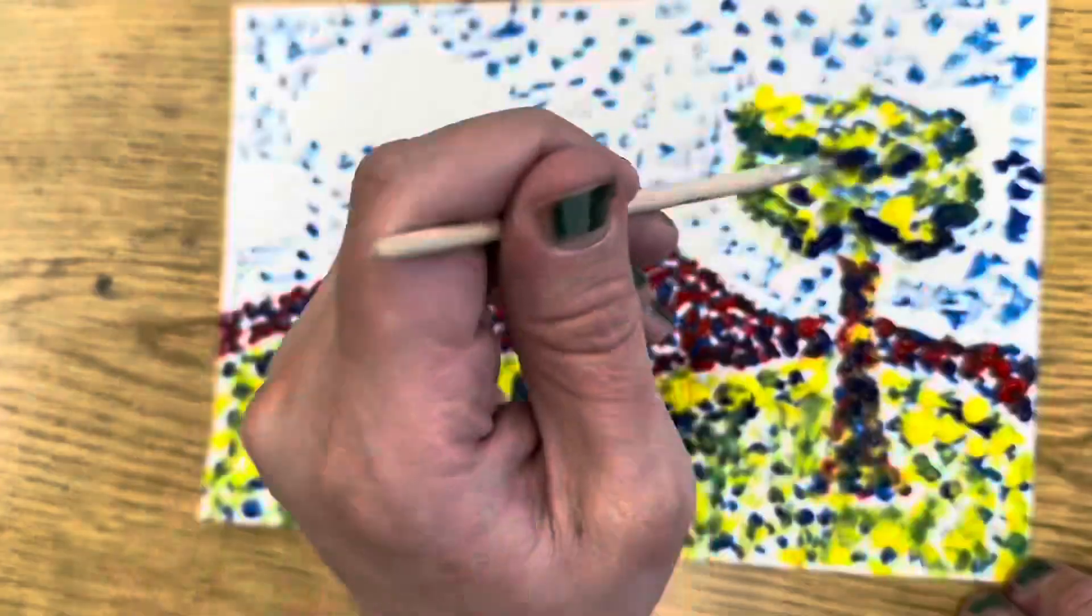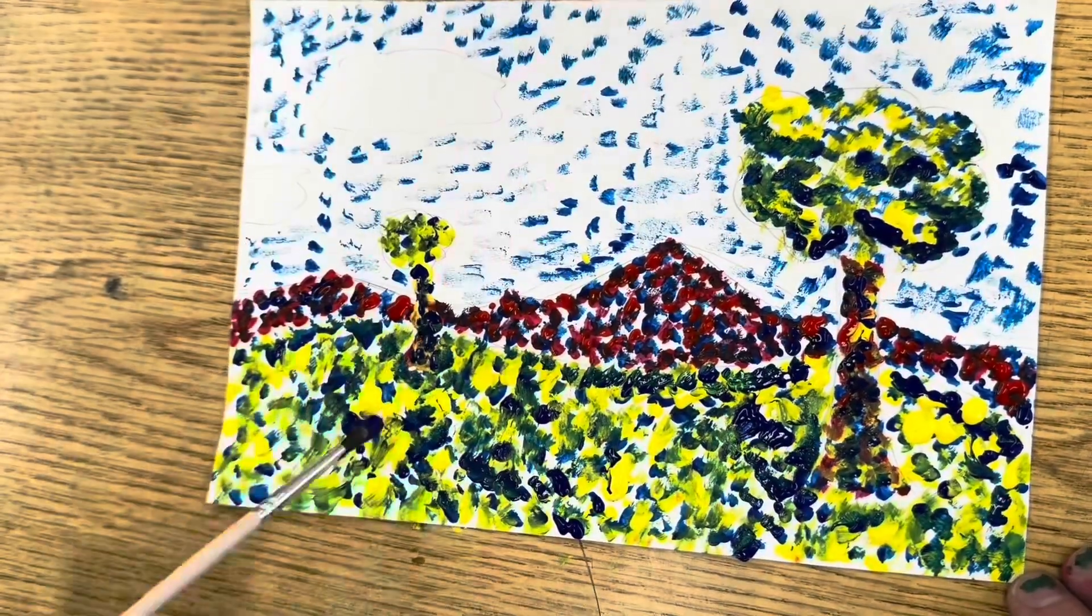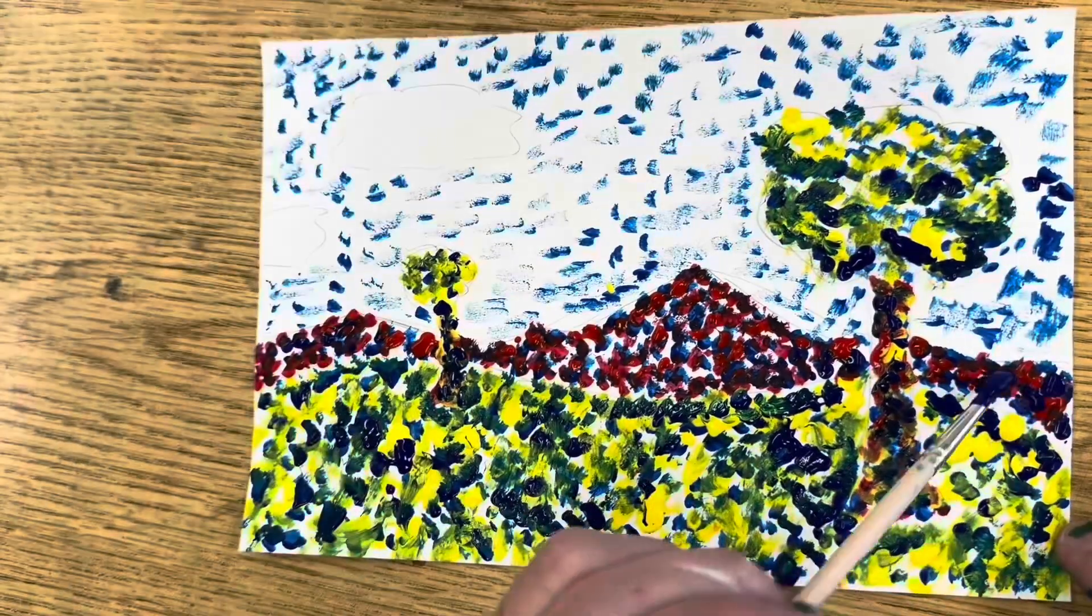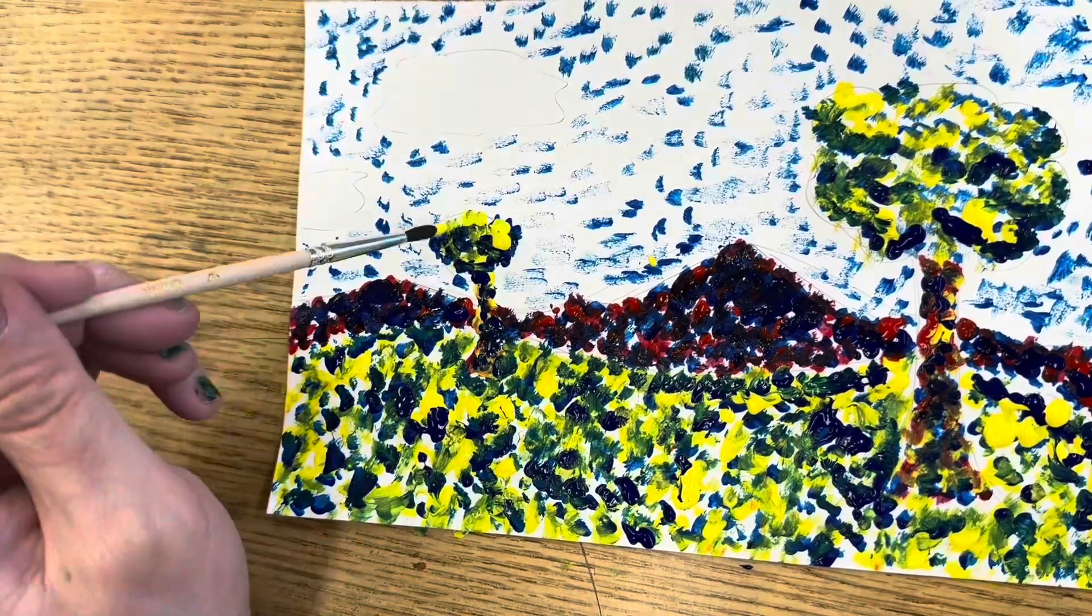I'm going back and adding some more layers of colors and darkening some spots, and letting the paint mix together a little bit as I'm painting it, because it's wet paint on wet paint. You could try drying it first or not.